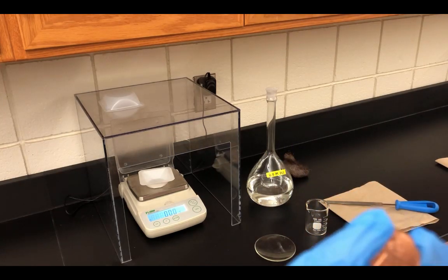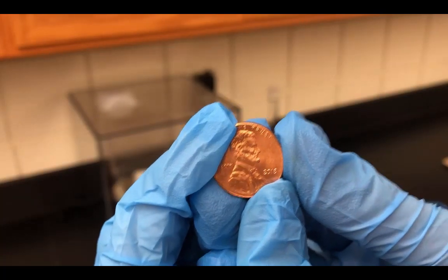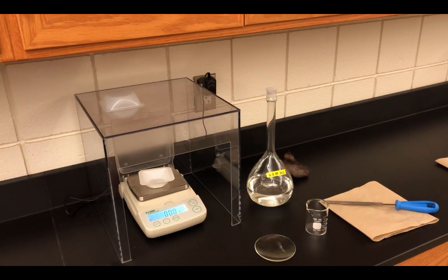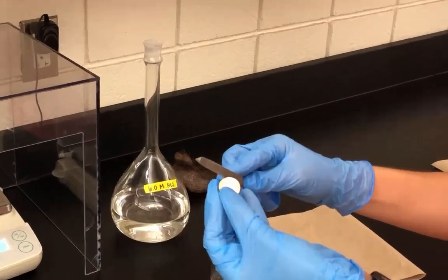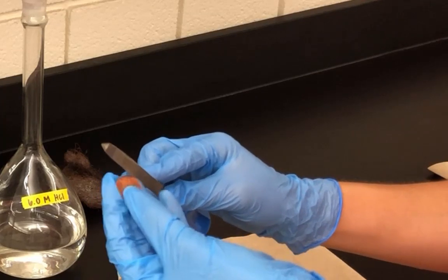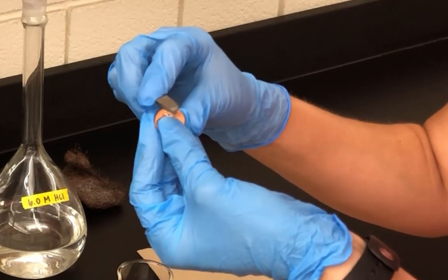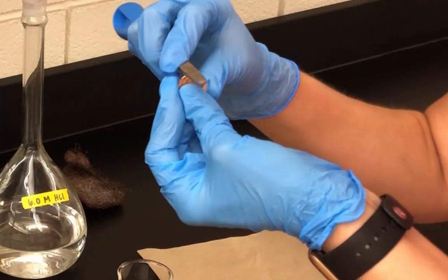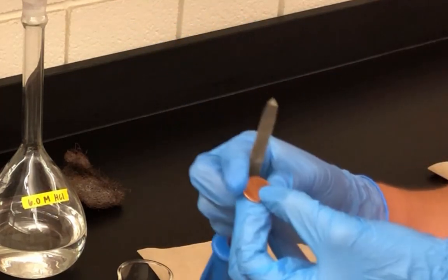Our post-1982 penny has a date of 2018. Record that date. We're going to use a metal file and scratch four deep cuts into the edge of the penny at 12 o'clock, 3 o'clock, 6 o'clock, and 9 o'clock.